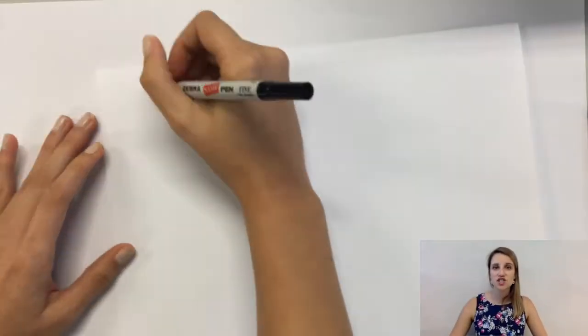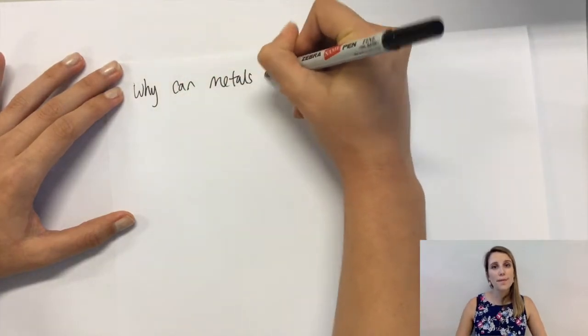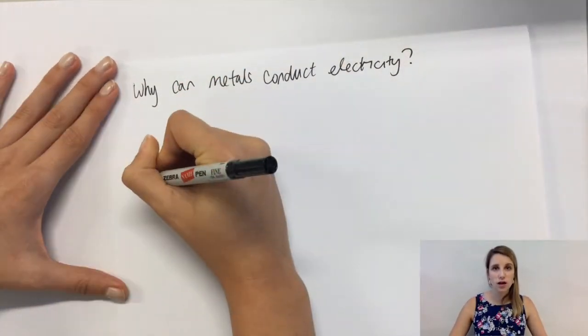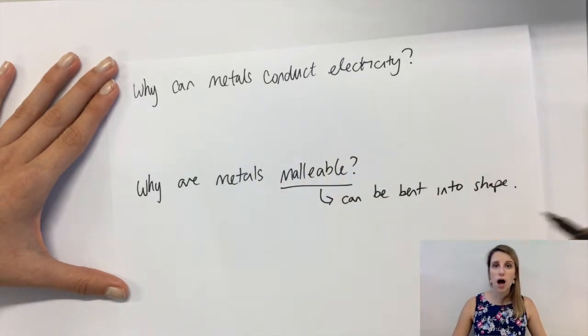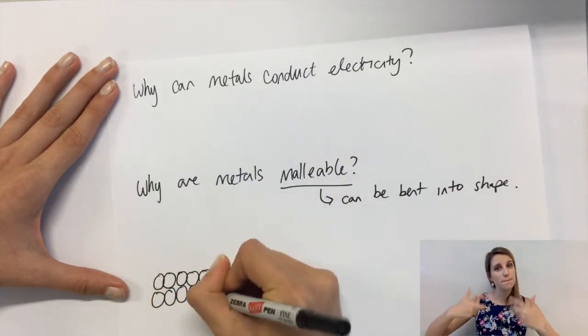Now we need to relate that structure to two of the main properties of metals. One, that metals conduct electricity, and two, that metals are malleable. That means they can be bent into shape.